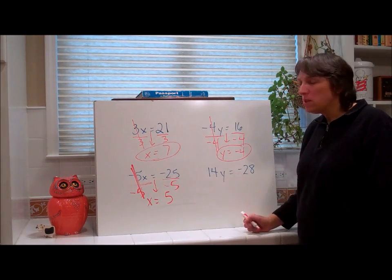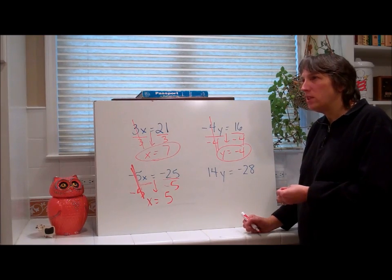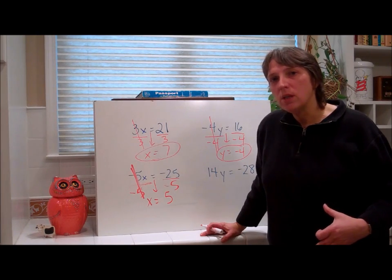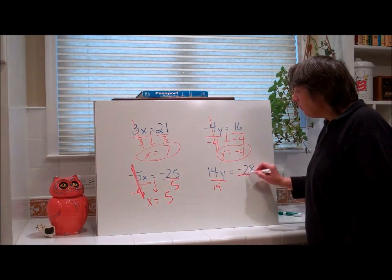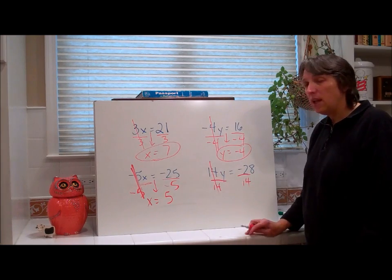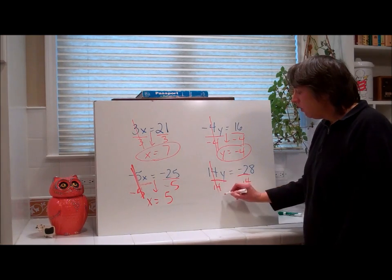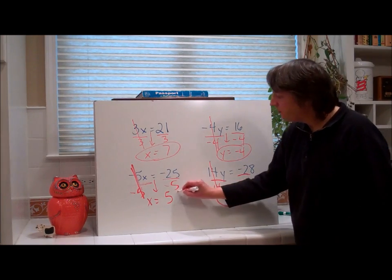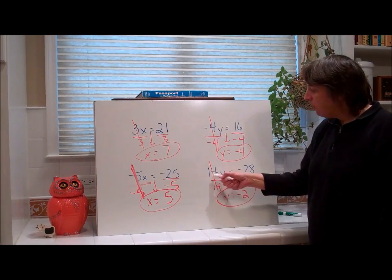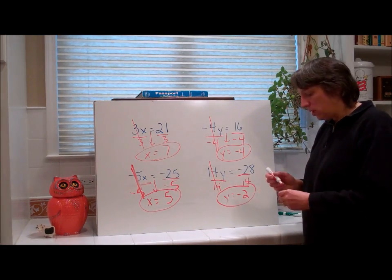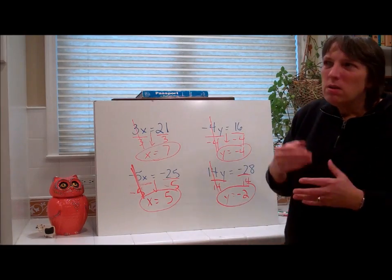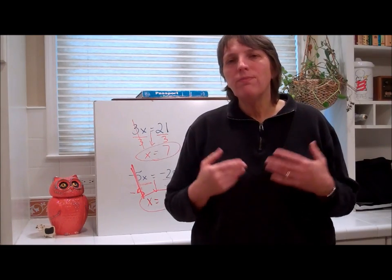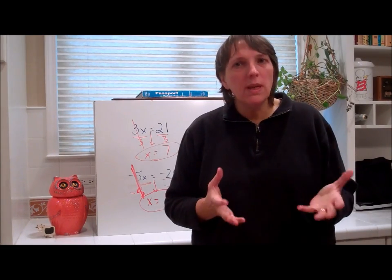What's being done to the variable here? We're multiplying by 14. How do we undo that? Divide by 14. Mark both sides, divide by 14. The 14s cancel to give 1y. Bring down the y — negative 28 divided by 14 is negative 2. Check: 14 times negative 2 is negative 28. When you have multiplication equations and undo by division, that's a pretty easy step you should get quickly.